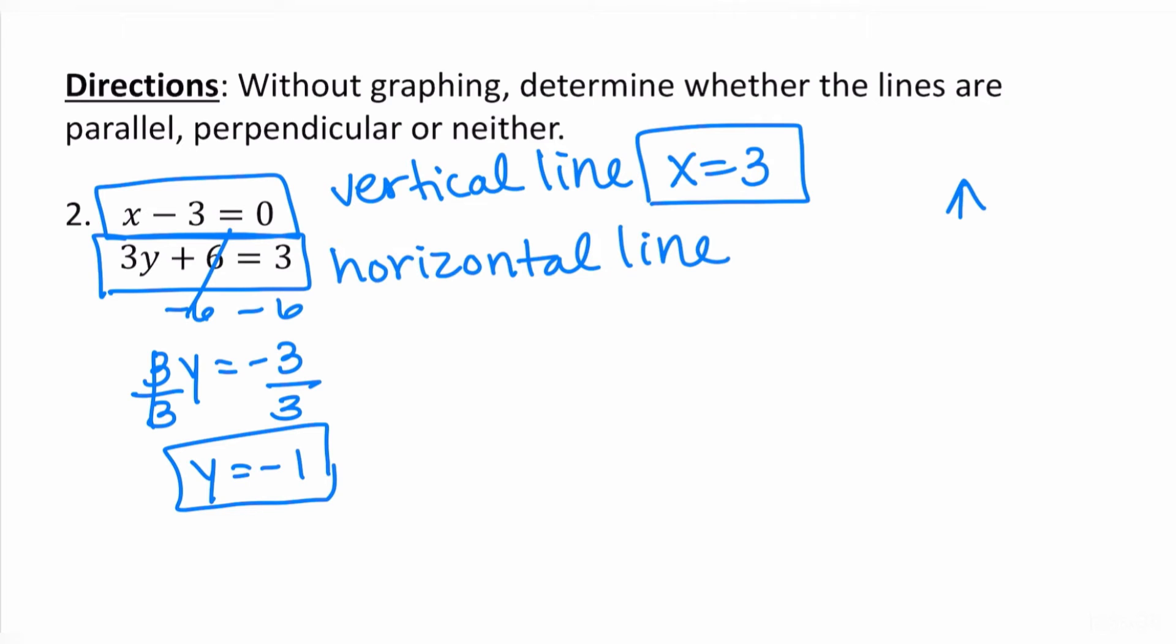I have one of them is a vertical line. I know it says to do it without graphing, but I just want you to see. And one is a horizontal line. Again, these two lines are going to intersect to form a right angle. Therefore, these two lines are going to be perpendicular. And I didn't necessarily graph it. I just kind of wanted to show you what a vertical and horizontal line look like when they cross. So even ignoring the graph, we can tell right away that because the first one has an x only, it's going to be a vertical line. The second one has a y only. It's going to be a horizontal line and a vertical and horizontal line. When they intersect, they form a right angle. So I know this one is going to be perpendicular.